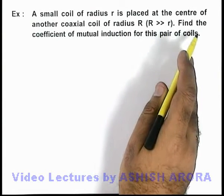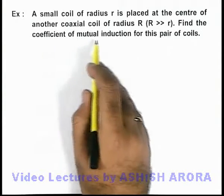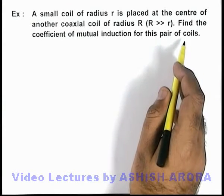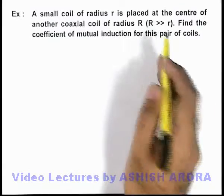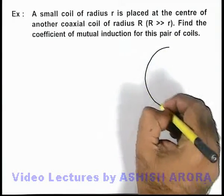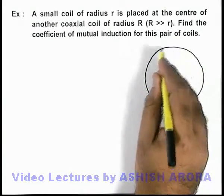And it is asking find the coefficient of mutual induction for this pair of coils. Now we are not given with the separation between the 2 coils so let us consider the 2 coils are concentric.